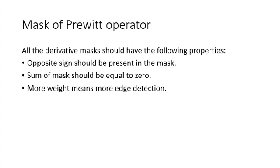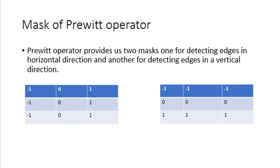All derivative masks will have the following properties: opposite signs should be present in the mask. For example, as we see in this mask, here is minus one and at the right side here is plus one; above minus one then below plus one.